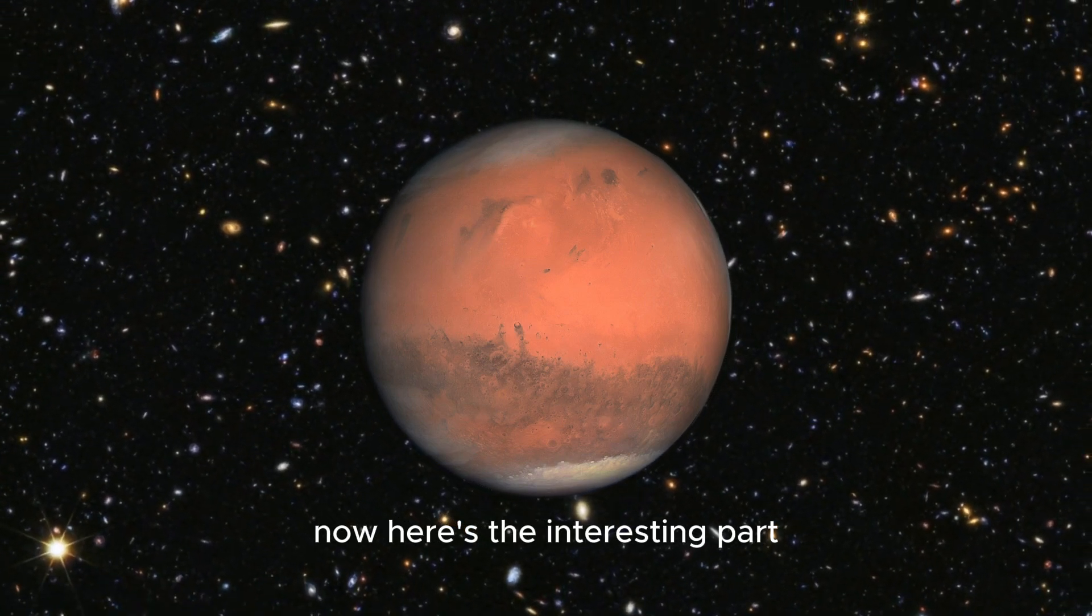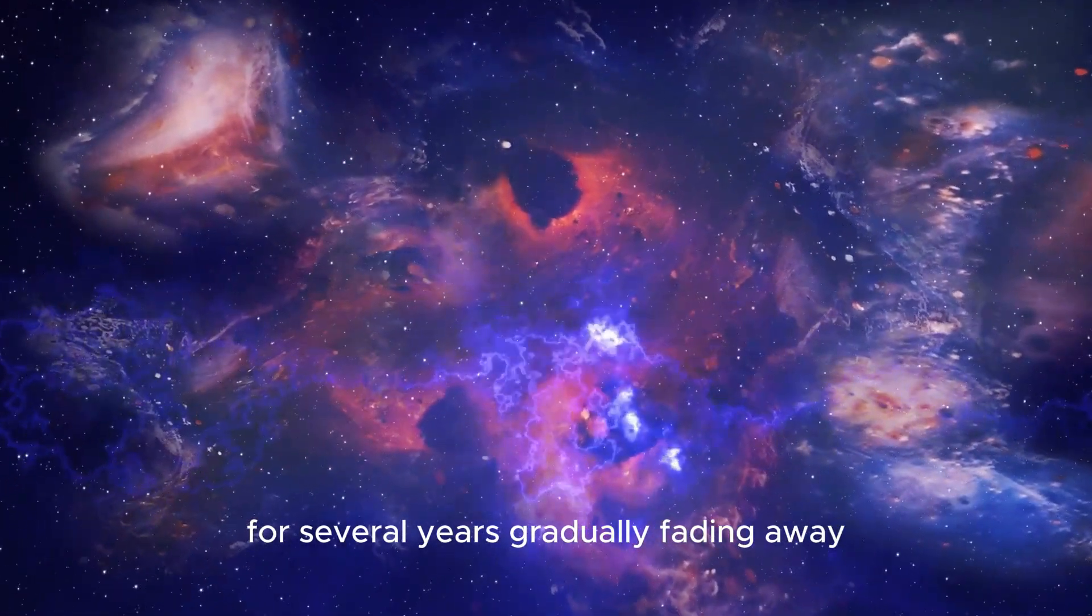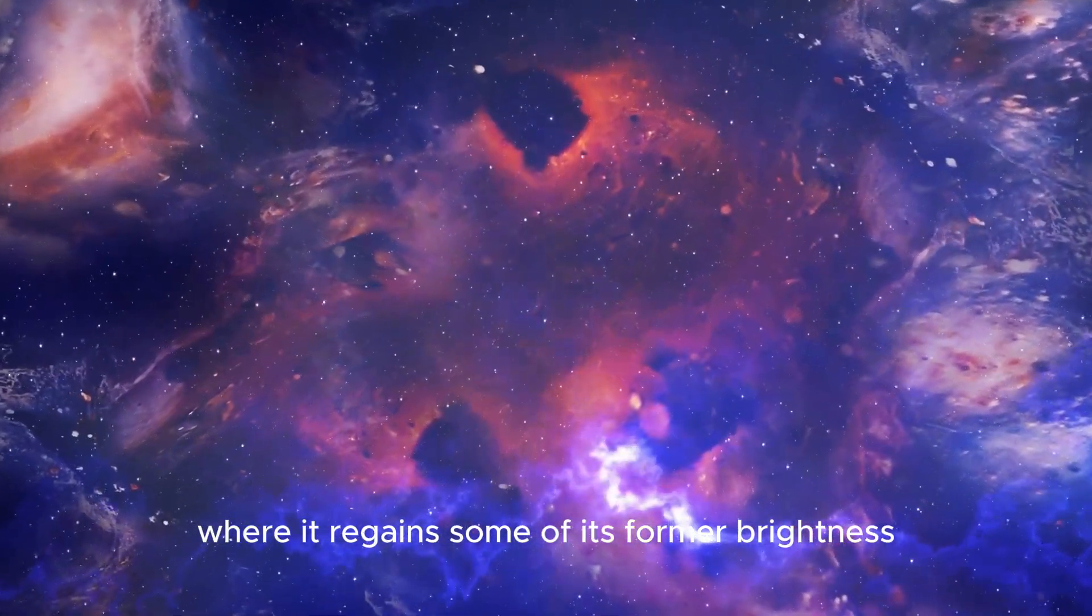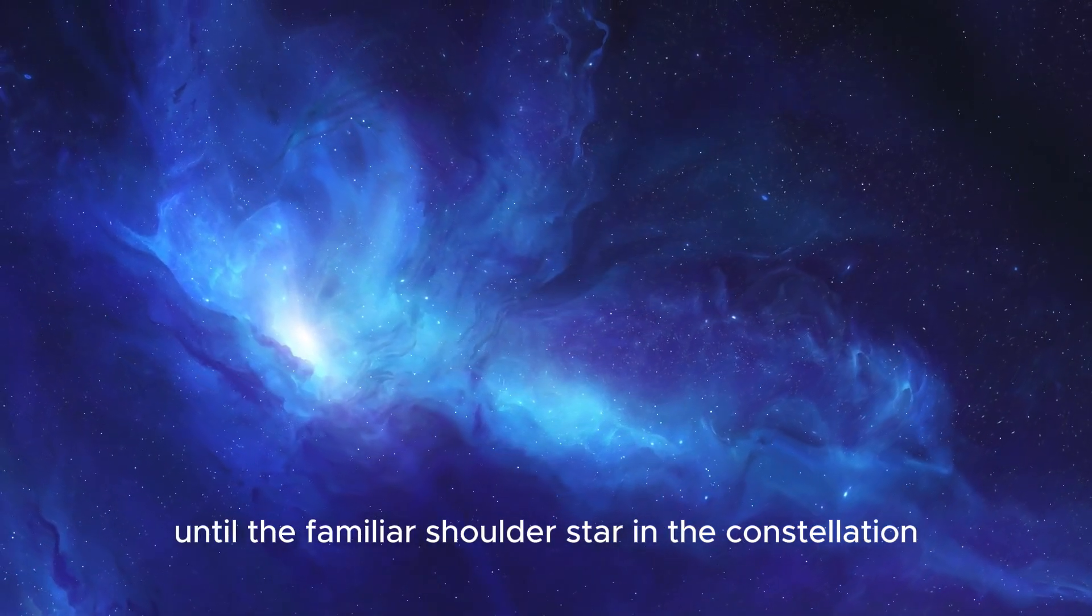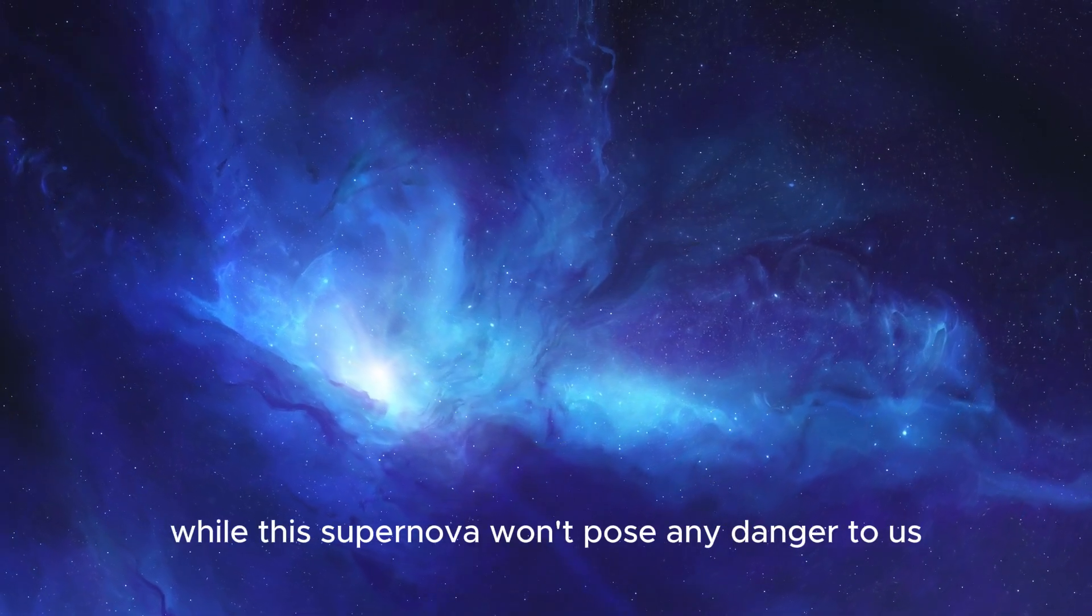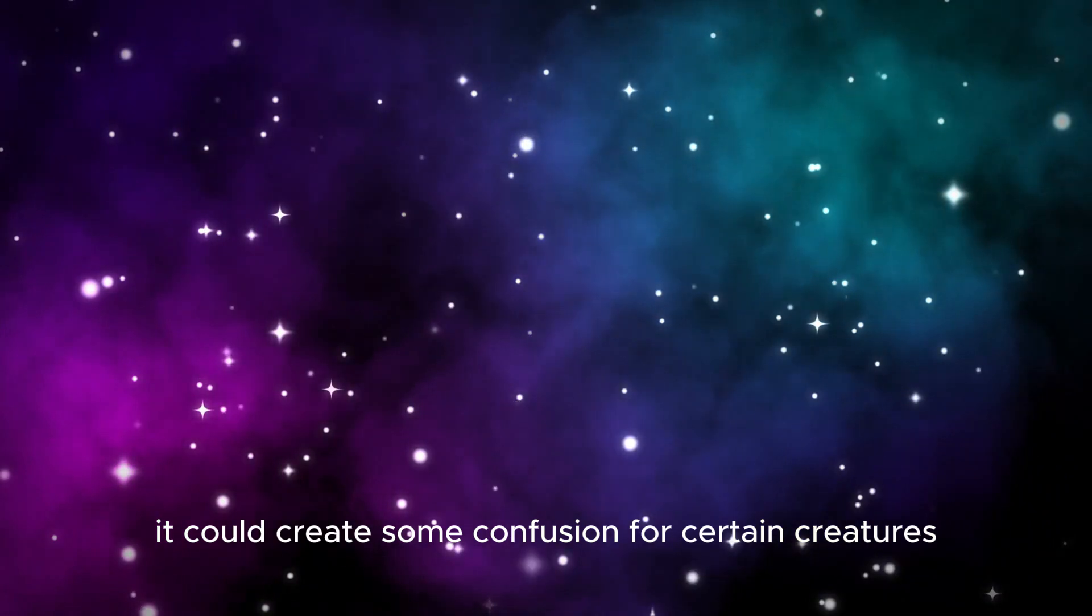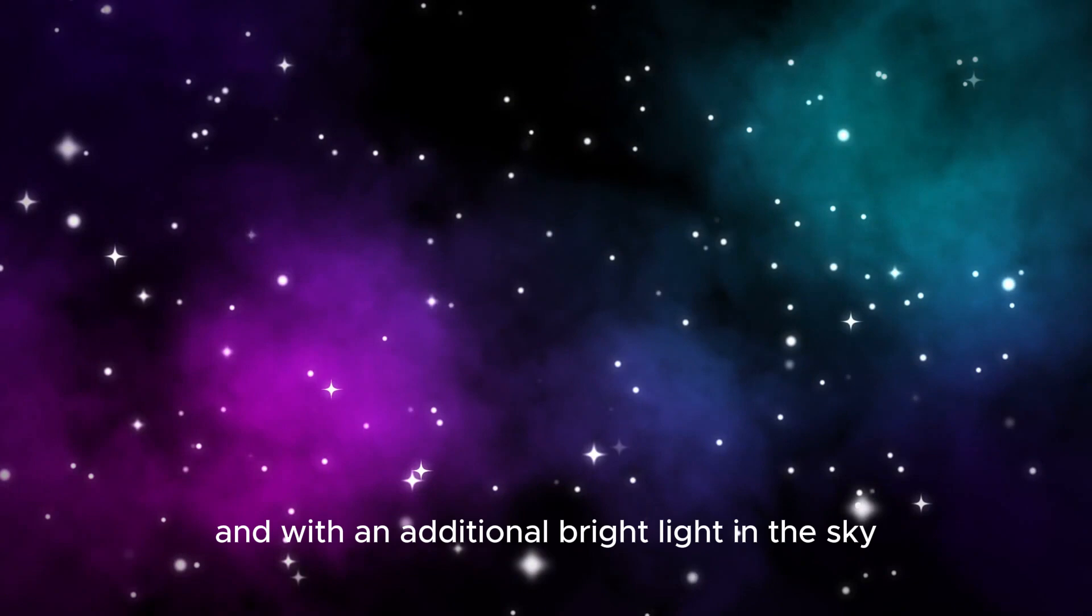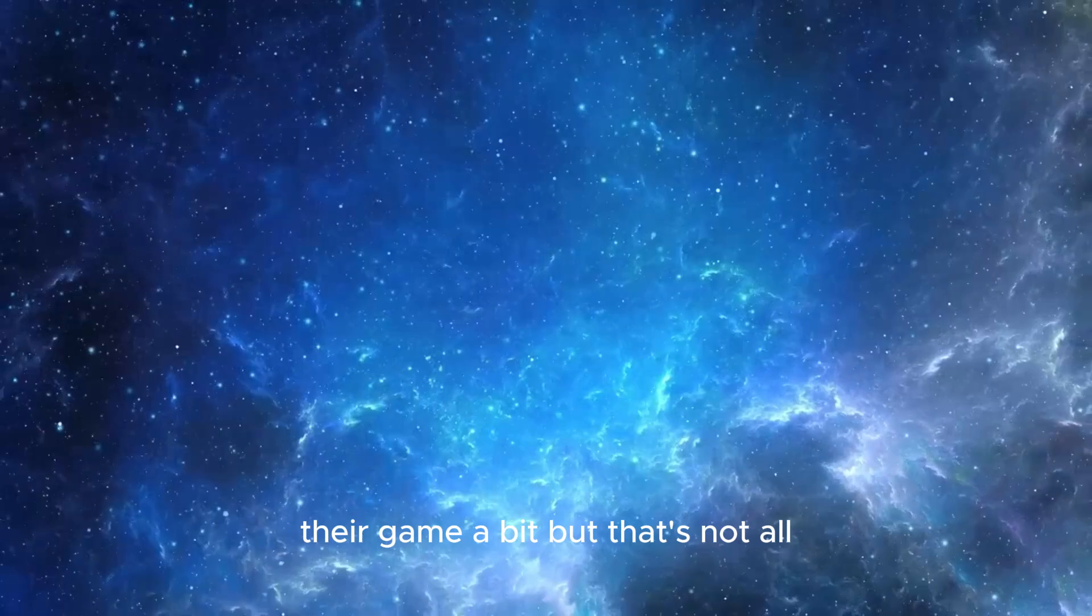Now here's the interesting part. The supernova would be visible at night for several years, gradually fading away. There might be a brief period where it regains some of its former brightness, but eventually, it will continue to fade until the familiar shoulder star in the constellation Orion disappears altogether. While this supernova won't pose any danger to us, it could create some confusion for certain creatures. Some animals rely on moonlight for navigation, and with an additional bright light in the sky casting shadows, it might throw them off their game a bit.